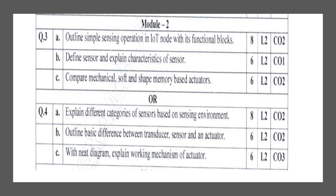Coming into Module 2: outline simple sensing operation in an IoT node with its functional block, define sensor and explain characteristics of sensor, and compare mechanical, soft, and shape memory-based actuators. These three questions together carry 20 marks. In the alternative choices: different categories of sensor based on sensing environment, basic differences between transducers, sensors and actuators, and working mechanism of actuators with a neat diagram.